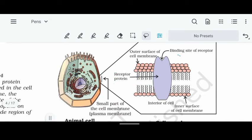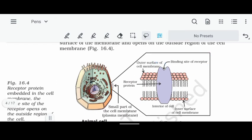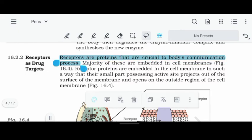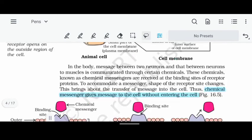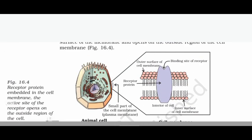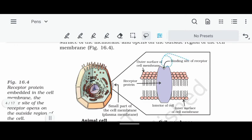Receptors are proteins crucial for the body's communication process. The majority are embedded in the cell membrane, with only a small portion exposed. In our body, neurons are the structural and functional unit of the nervous system. Neurons communicate with each other through chemicals called chemical messengers — for example, hormones. Receptors act as the binding site for these chemical messengers.